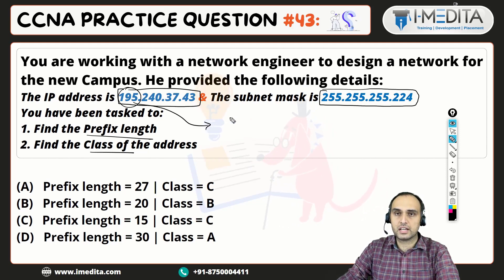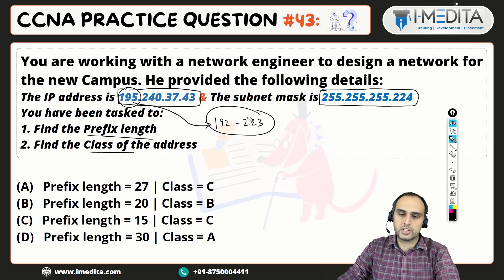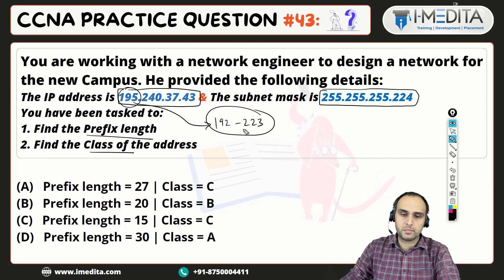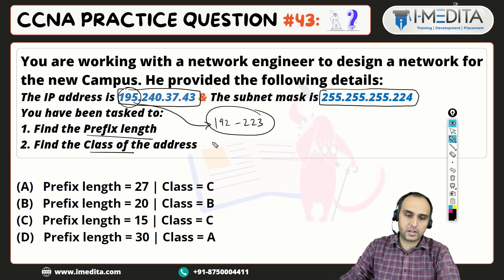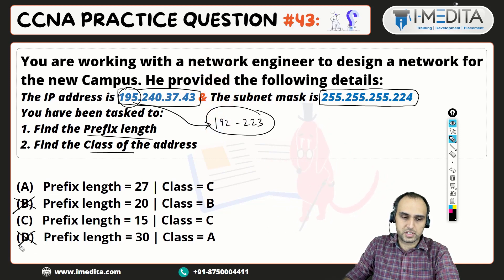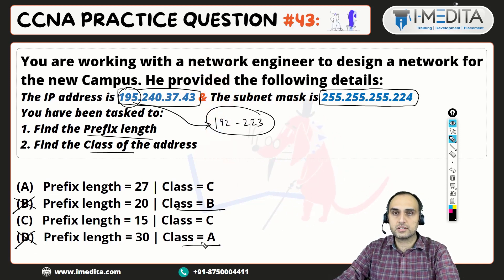This is a class C IP, because in class C the value of the 1st octet ranges from 192 to 223. Based on that, we can already rule out option B and option D, because those are in class B and class A.